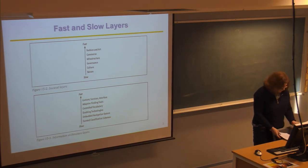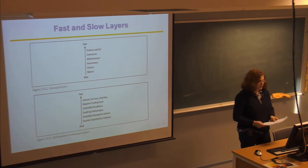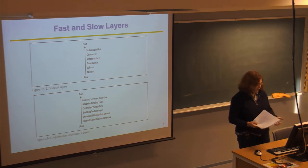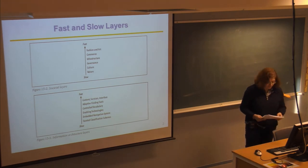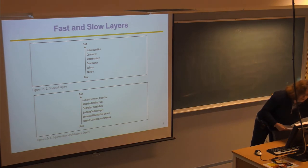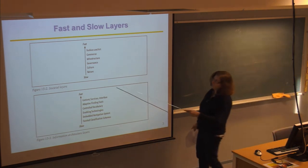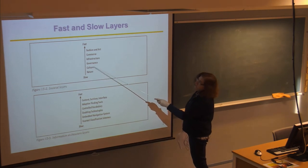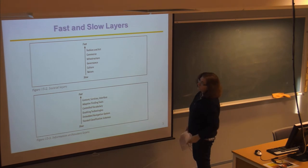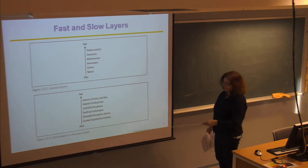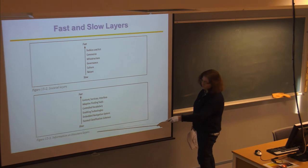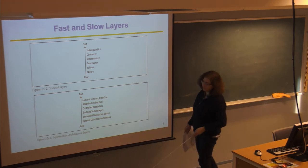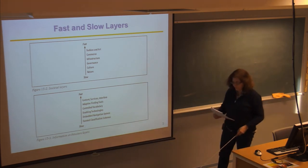What I wanted to point out are the different layers of what changes on a website — what changes quickly and what changes slowly. In society, certain things change very slowly: nature is the slowest, then cultures, governments, infrastructure, commerce, and fashion and art. Similarly, with information architecture there are certain layers that are slow to change and others that change more quickly.